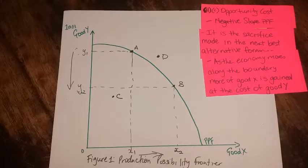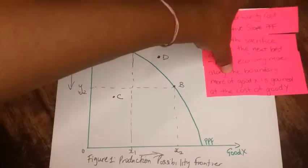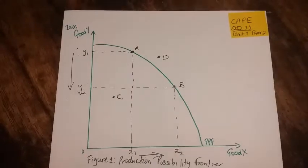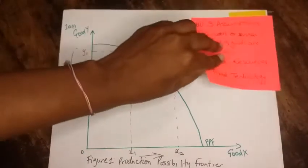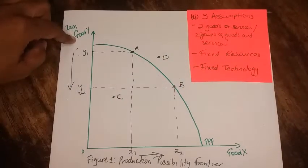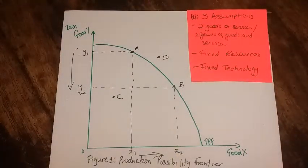For part B.1, they are asking to state three assumptions of the PPF. Three of those assumptions are that we are looking at two goods or services - this is good Y and good X - or it could be two groups of goods and services, so you might look at public goods and private goods, but it must be two: two goods or services. The resources must be fixed and fixed technology.